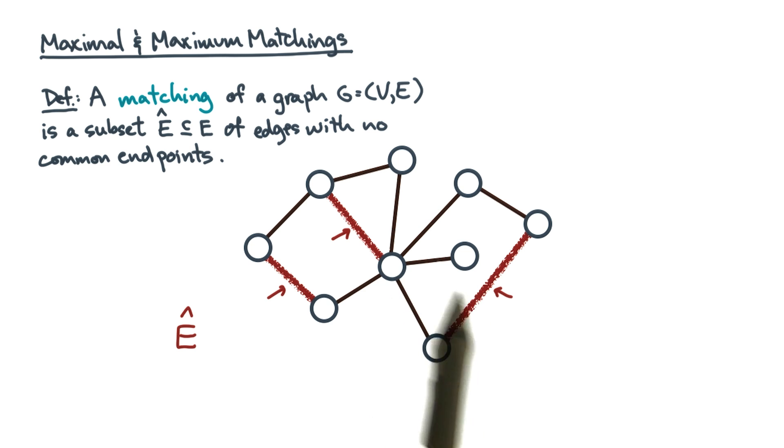For instance, take these three highlighted edges. They form a matching because they don't share any endpoints.